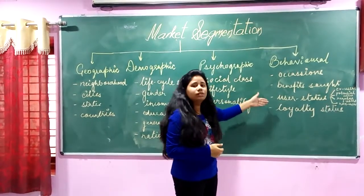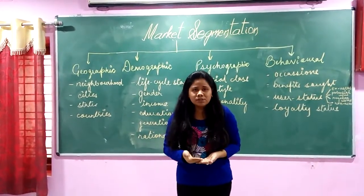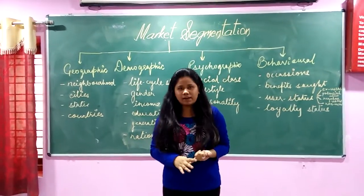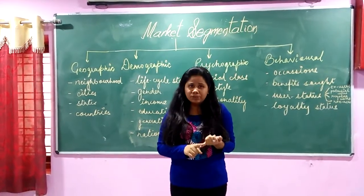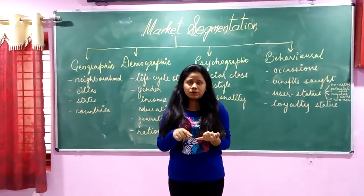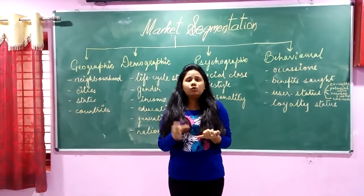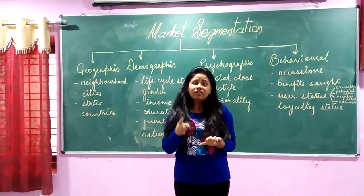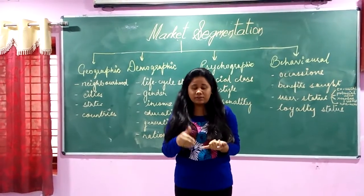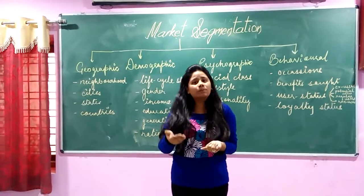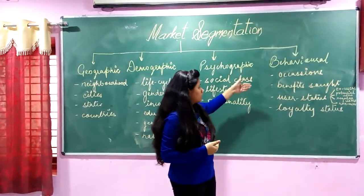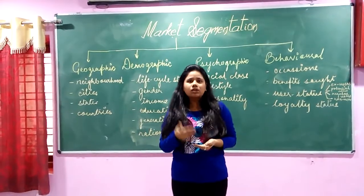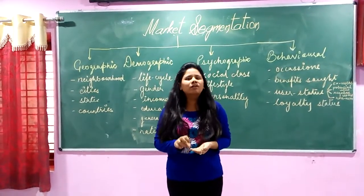Another factor is user status. A company can divide its market according to user status by considering four factors: non-users, existing users, potential users, and regular users. A company needs to attract and develop products that could attract non-users, retain its present or regular users, attract potential users, and encourage ex-users to come back and seek value in their product. So a company can also divide their market according to this particular factor.